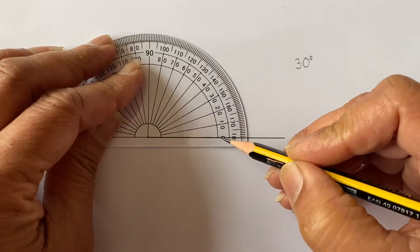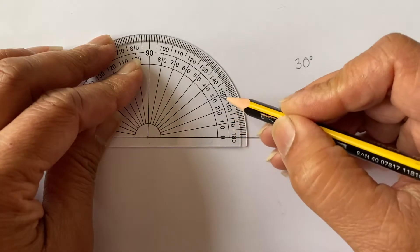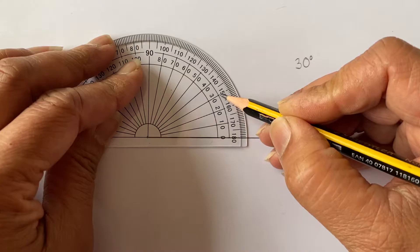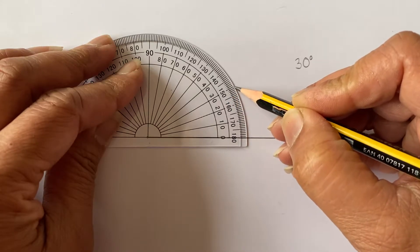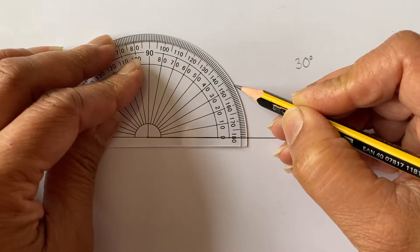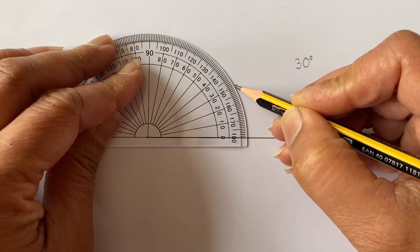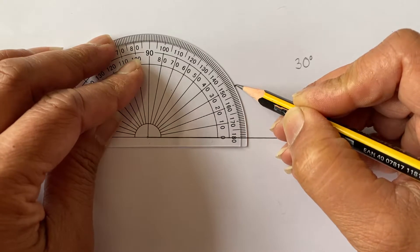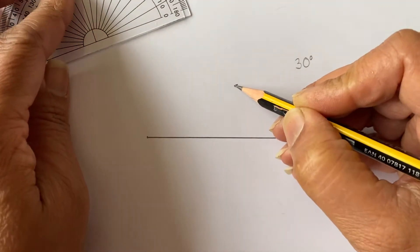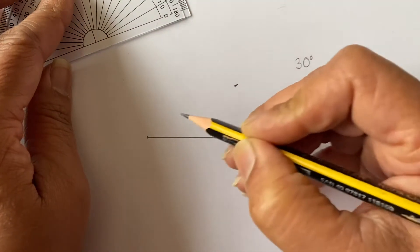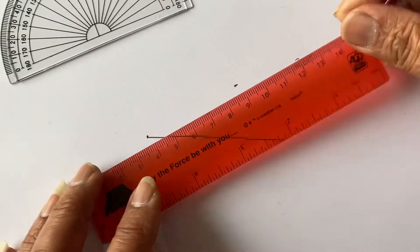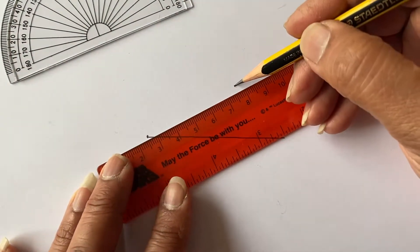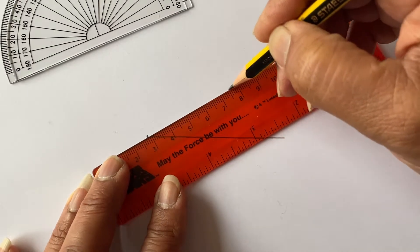So starting from zero, 10, 20, 30, and then I've got to go very slowly. Watch how I do this, very slowly up, and I'm going to draw a little line here because that's where I want to go. Then when I move this away, I've got my marking, my dot here and my dot here, and now I can use my ruler to join these two together.